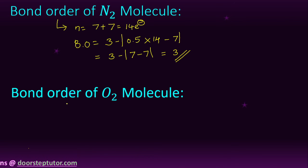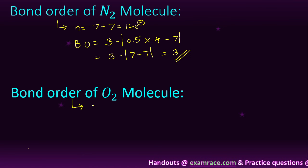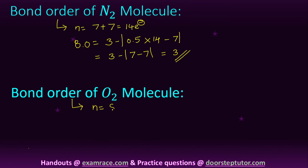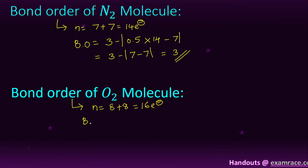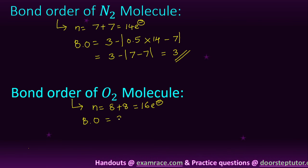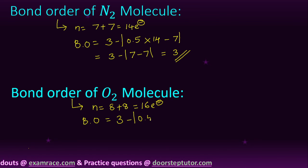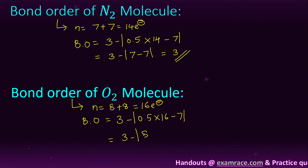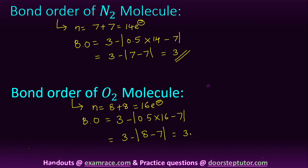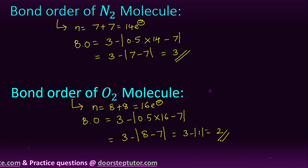Now, bond order of O₂ molecule. Oxygen has atomic number 8, so 8 electrons per atom; total = 8 plus 8 = 16 electrons. Bond order = 3 minus modulus of (0.5 × 16 − 7) = 3 minus modulus of (8 − 7) = 3 minus modulus of (1) = 3 minus 1 = 2. The bond order of O₂ molecule is 2.